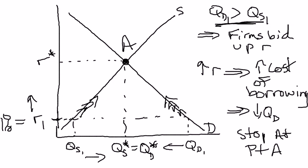I did an example of a shortage where the real interest rate starts off below the equilibrium. I'll leave it as an exercise for you to do an example where the real interest rate starts above the equilibrium. There, there'll be a surplus, and that should have slightly different effects — so you should work on that one by yourself.